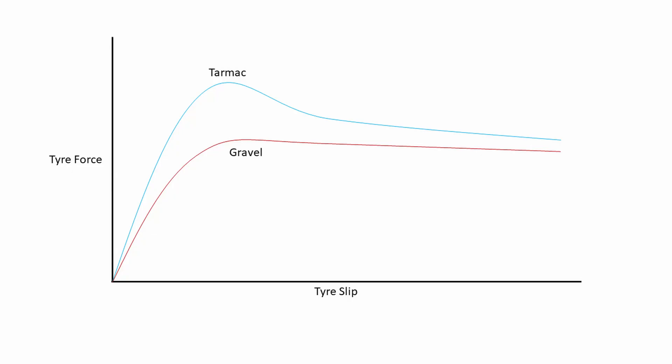The other thing you'll notice about this curve is that the gravel line is rather lower than the tarmac line, and that's because the amount of traction available on gravel is a bit less than it is on tarmac. Next up, let's talk about friction circles or traction circles.